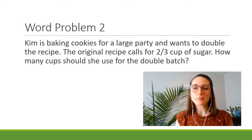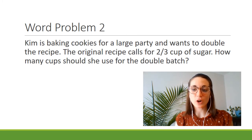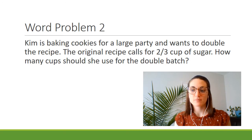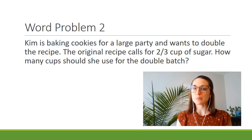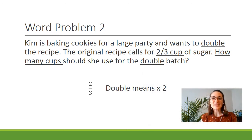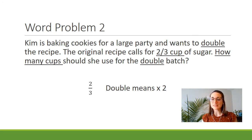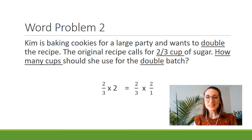Let's take a look at our second word problem. Kim is baking cookies for a large party and wants to double the recipe. The original recipe calls for two-thirds cup of sugar. How many cups should she use for the double batch? We're going to underline the important information: I've underlined the word 'double,' 'two-thirds cup,' and 'how many cups,' because that's the final answer we need. I know we need the number two-thirds, and I want to note that when it says 'double,' you can interpret that to mean times two. So two-thirds times two will be our problem.